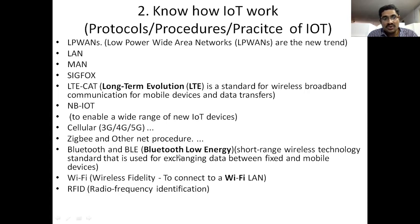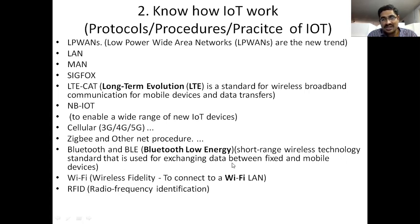Bluetooth and BLE — Bluetooth Low Energy — are two technologies for exchanging data. Bluetooth means a short-range wireless technology standard used for exchanging data between fixed and mobile devices. Wi-Fi means wireless fidelity — its full form. Wi-Fi connects to a Wi-Fi LAN, Local Area Networks, for transfer of data from one mobile to another device.